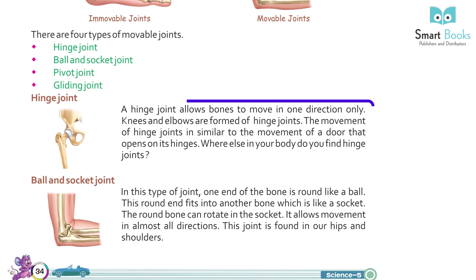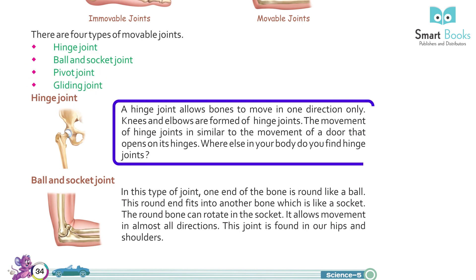Hinge joint: a hinge joint allows bones to move in one direction only. Knees and elbows are formed of hinge joints. The movement of hinge joints is similar to the movement of a door that opens on its hinges. Where else in our body do we find hinge joints?